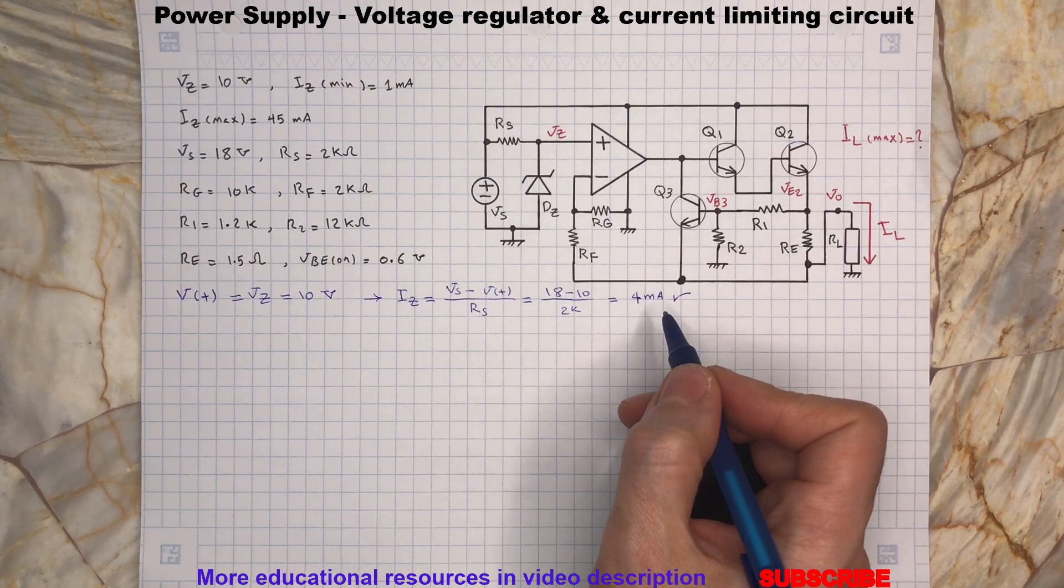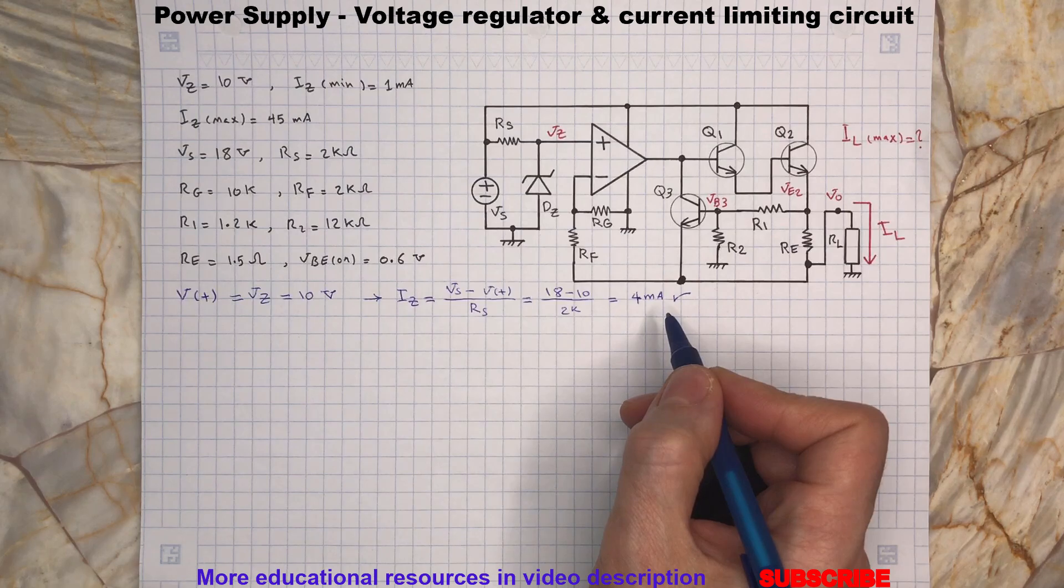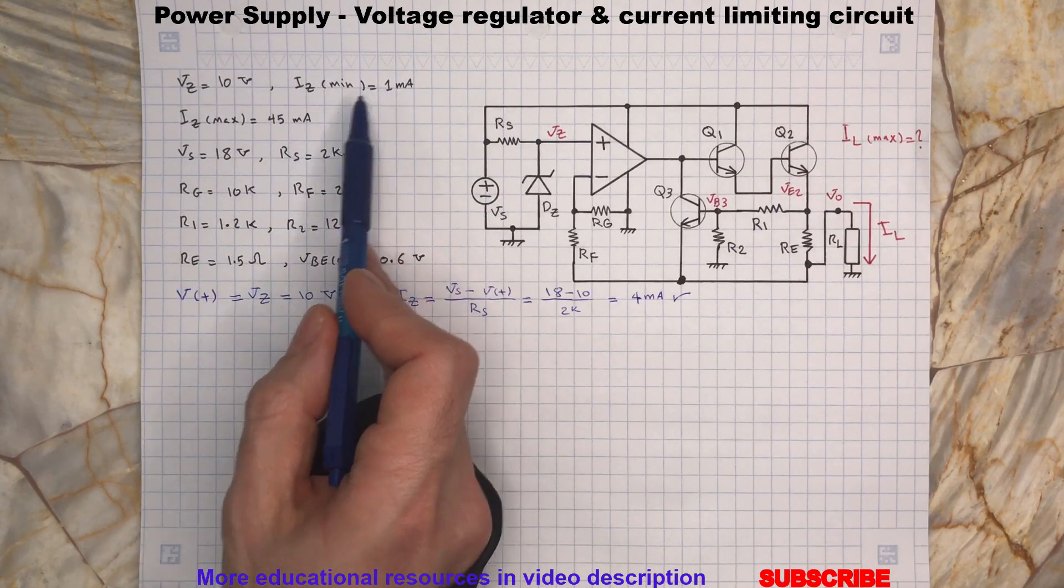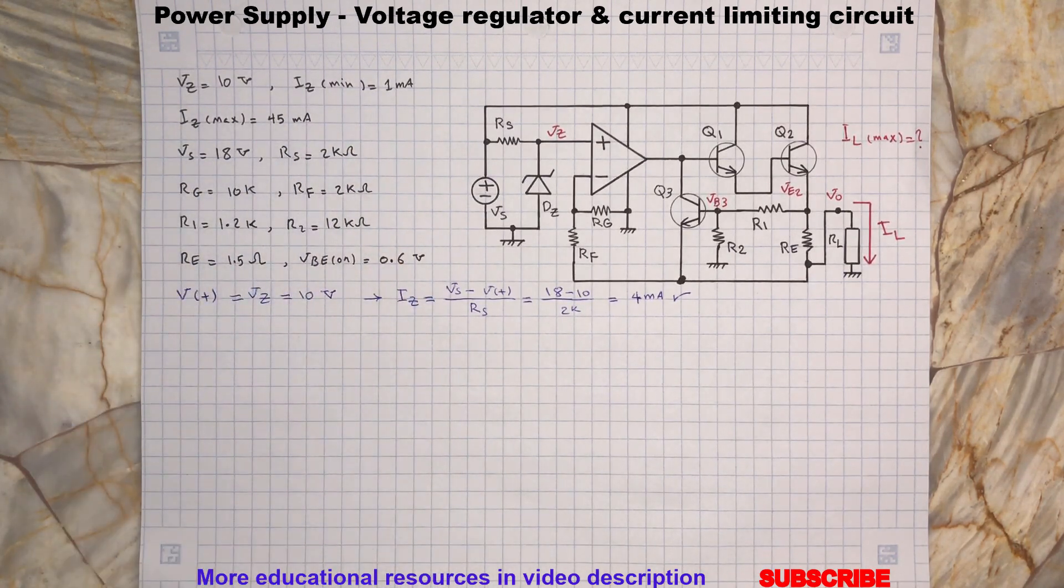So the Zener diode bias current is within the required minimum and maximum values specified. Now we can calculate the output voltage.